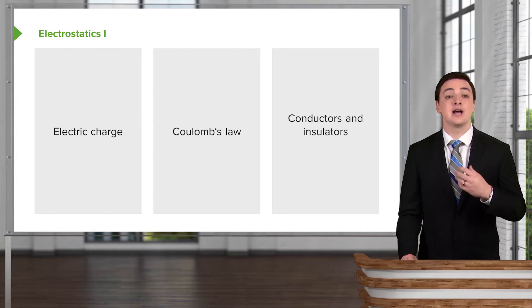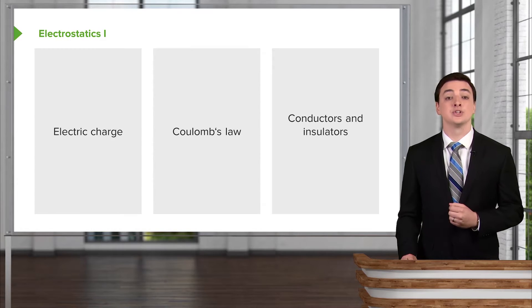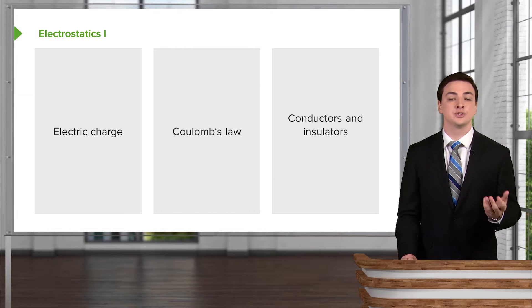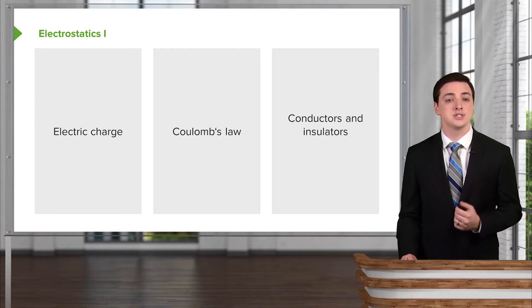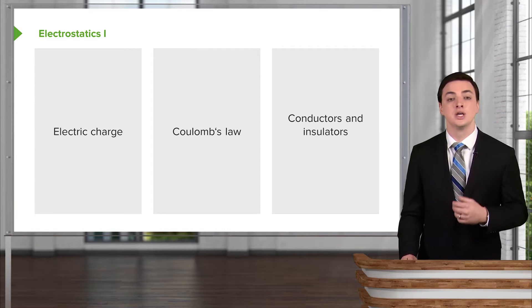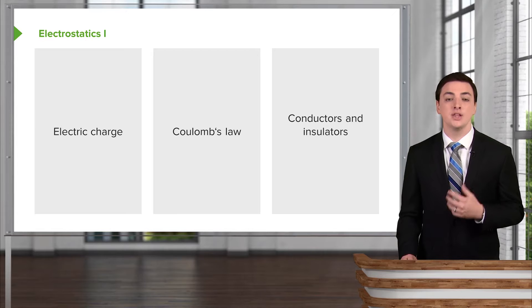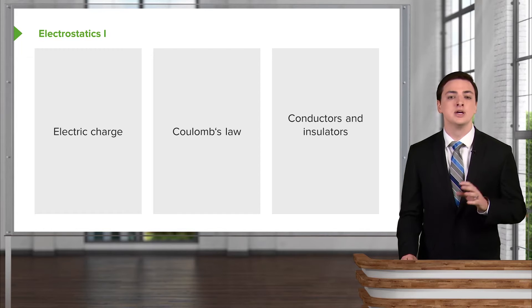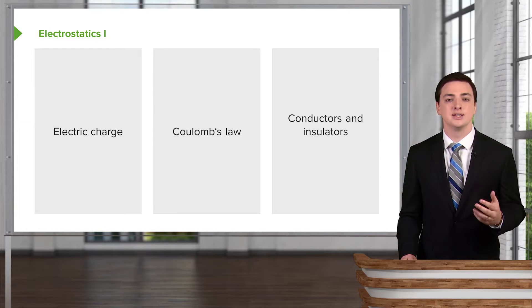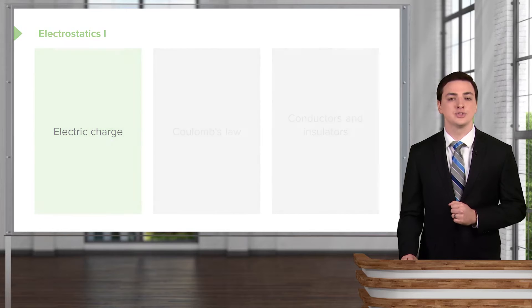What we need to do is first describe electric charge and what electric charge is, and then we'll talk about how electric charges attract each other and what forces arise in those situations, and that is Coulomb's law. And then finally we will talk briefly about the difference between a conductor and an insulator. But first with electric charge.